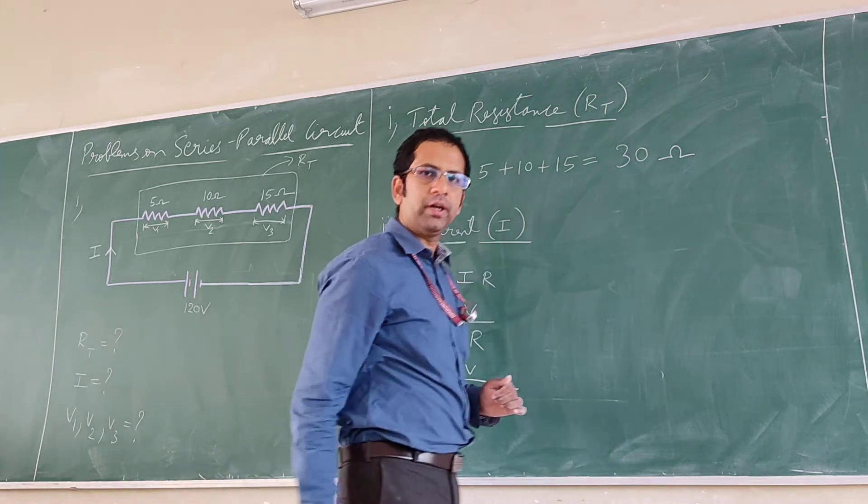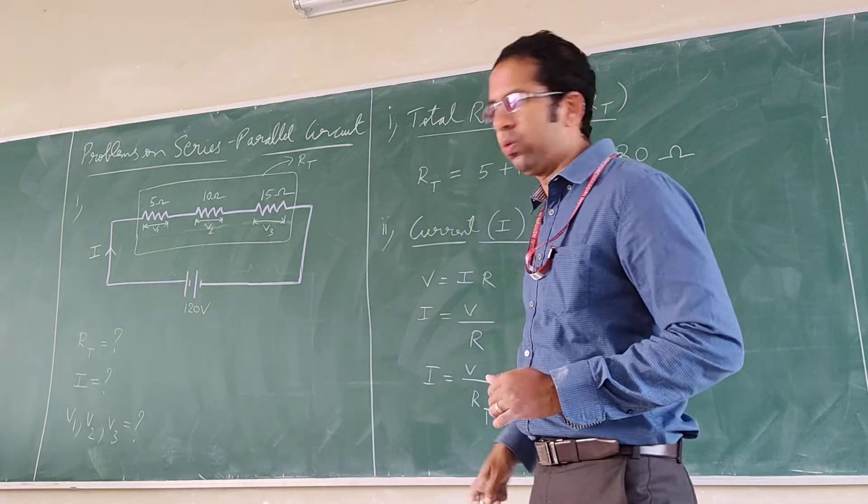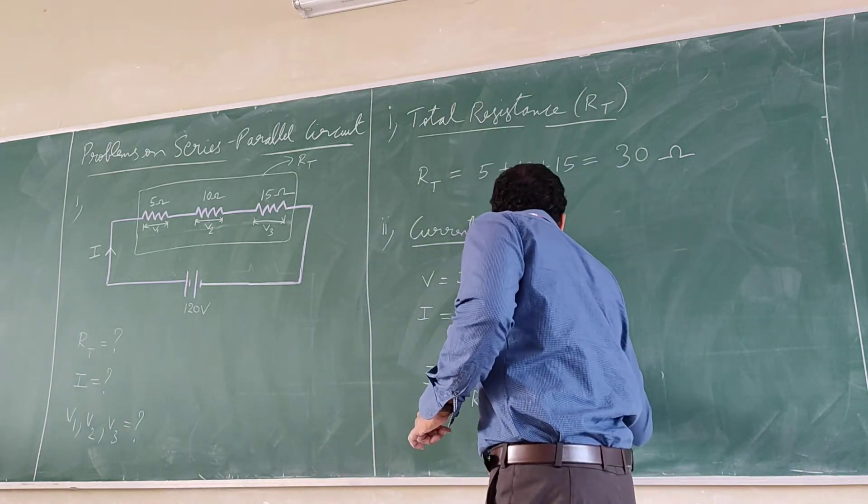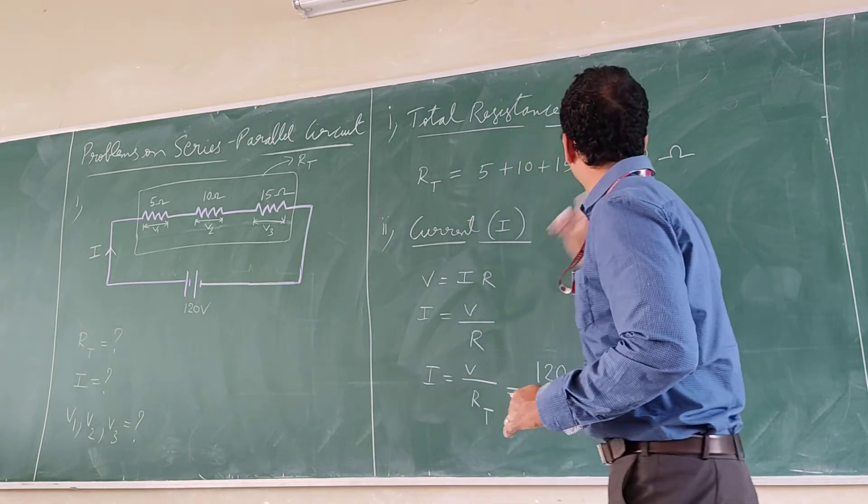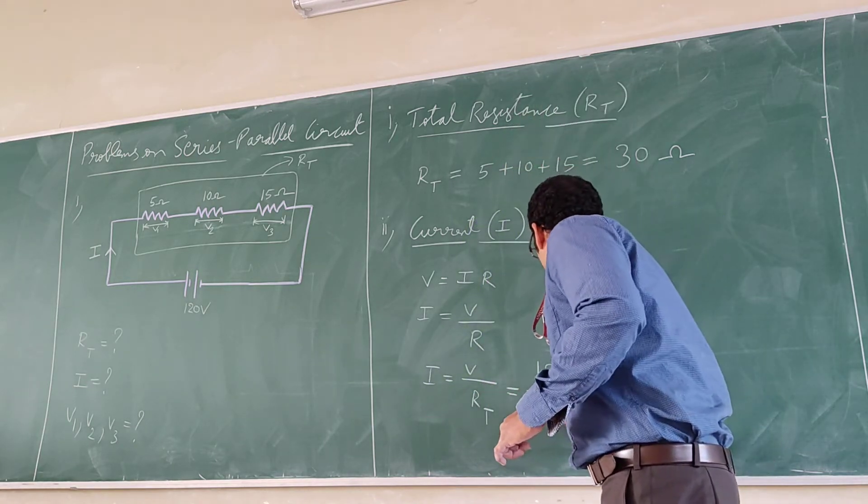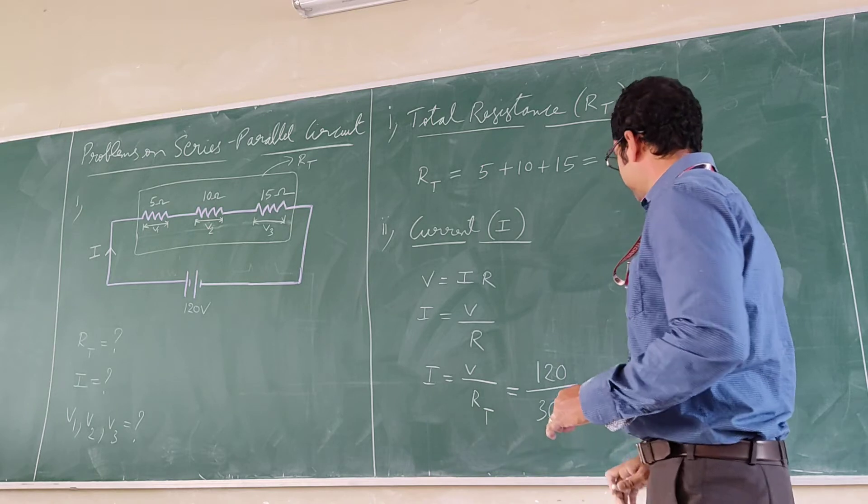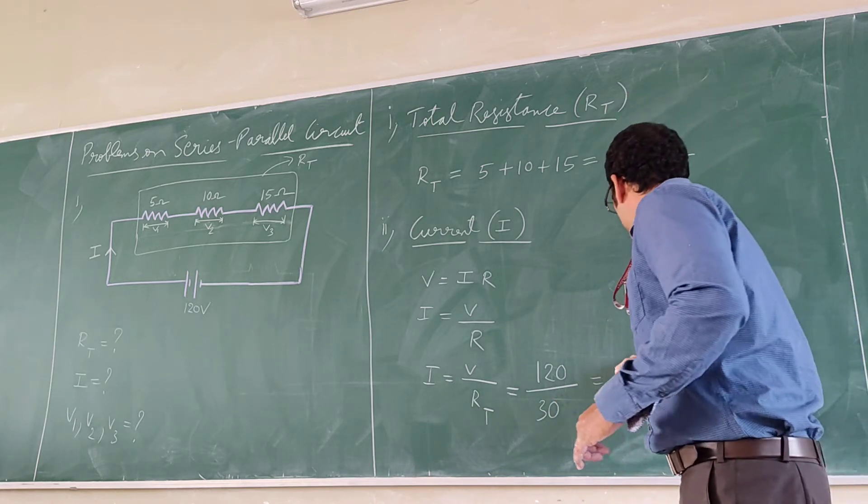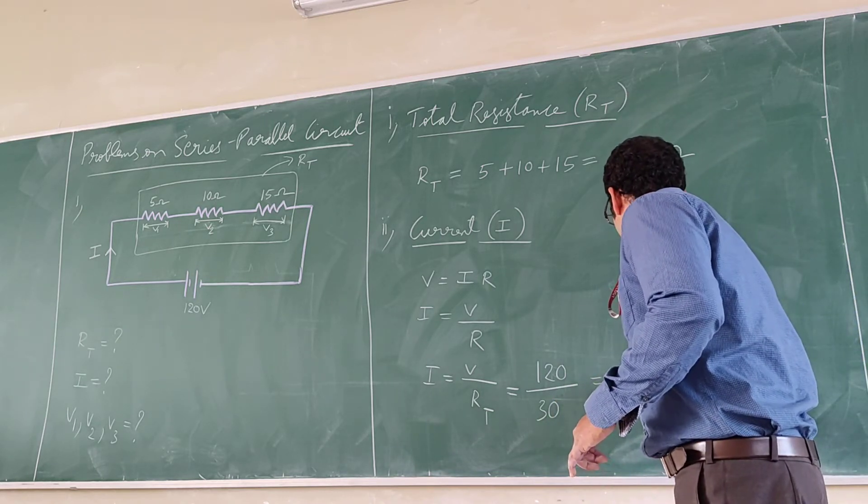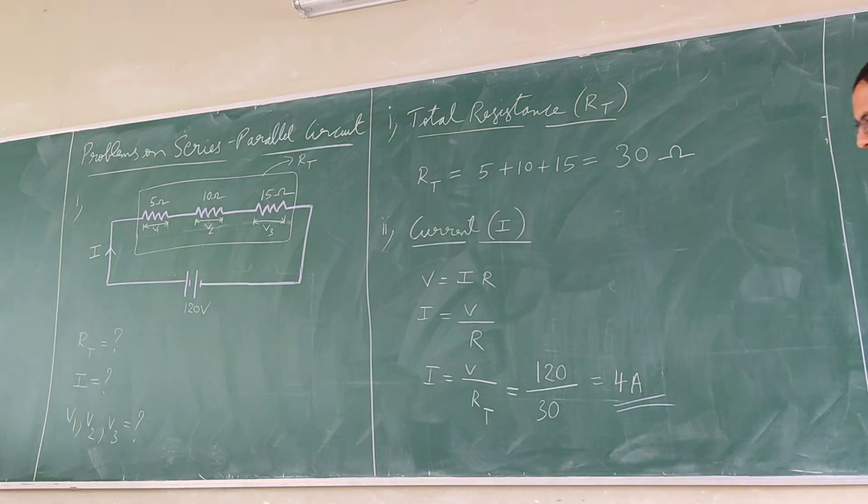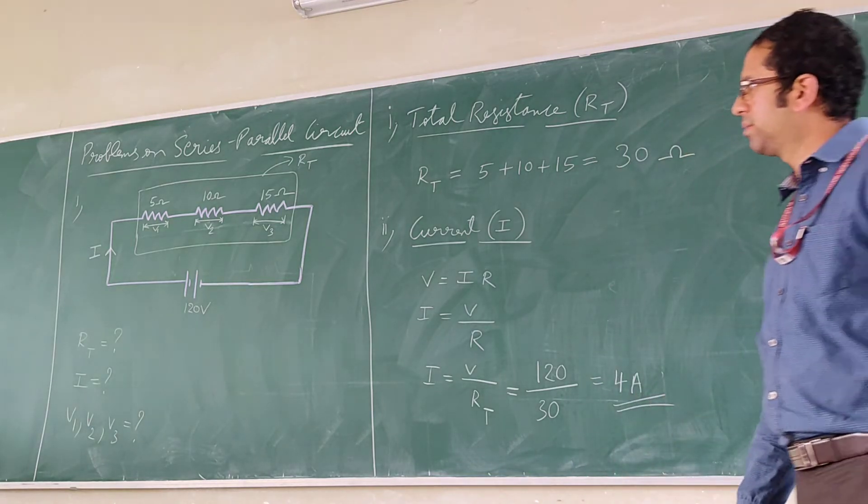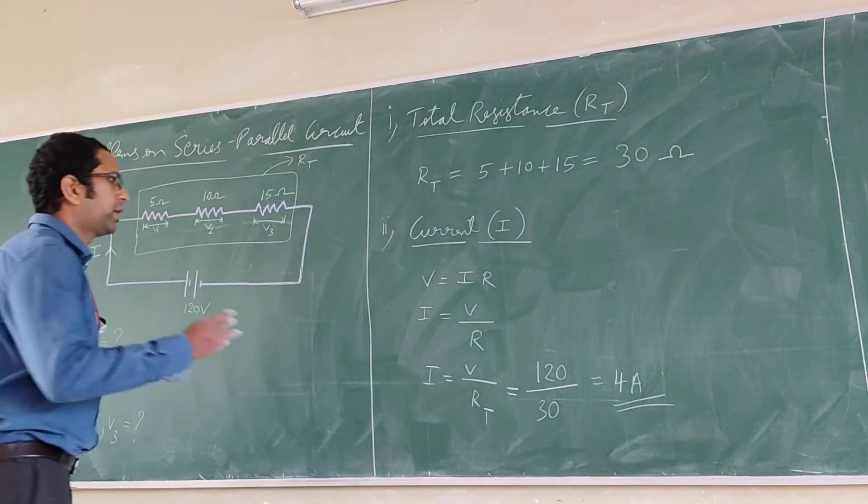What is V total? V is 120. What is the total value of the resistance? 30. 120 by 30, so you have 4 amps.